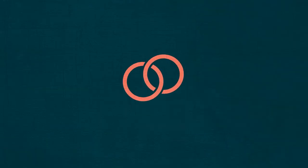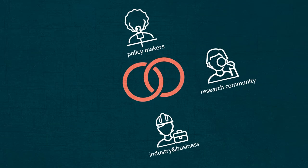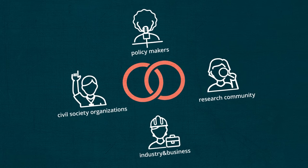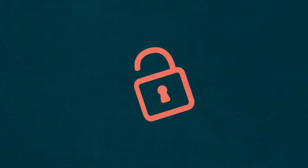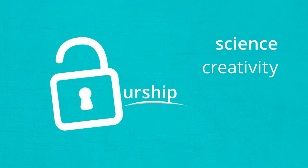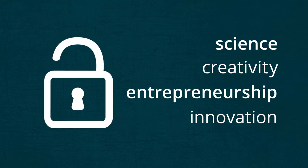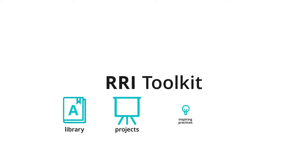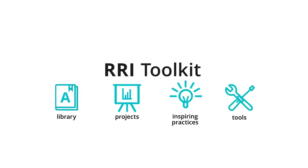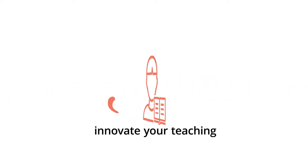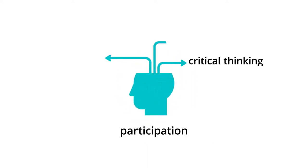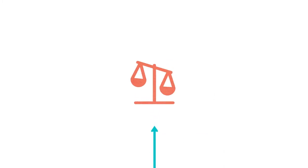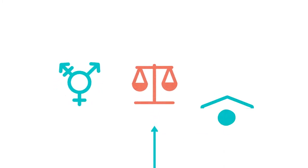You can also help by promoting activities that integrate the experiential knowledge of different stakeholders from outside the academic world. Making science education more open and inclusive can help to create synergies between science, creativity, entrepreneurship and innovation. In this sense, the RRI toolkit provides resources and inspiring experiences that will help you innovate your teaching practices and promote empowerment for participation and critical thinking on issues such as ethics, gender equality and governance of science.